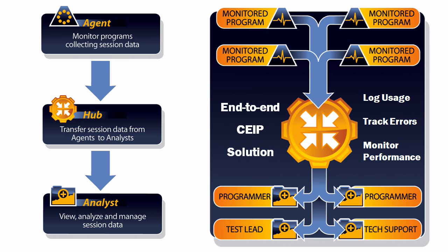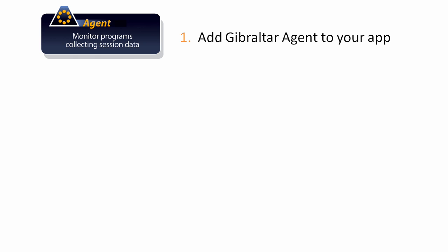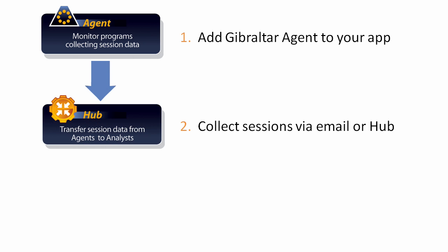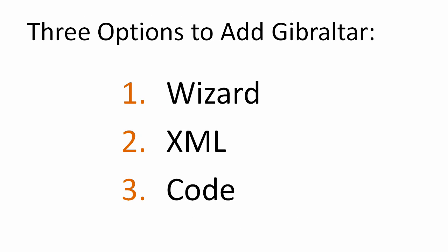Gibraltar is an end-to-end solution for recording, collecting, and analyzing data that will help you better support and improve your .NET applications. There are three aspects to integrating Gibraltar. First, you need to add Gibraltar Agent to your application so that it can record events, metrics, and any errors that occur. Second, you need to gather the data Gibraltar Agent records so that it can be analyzed. Third, you analyze the data Gibraltar Agent records using a desktop application we call the Gibraltar Analyst.